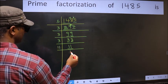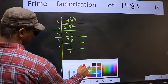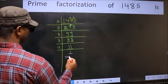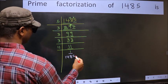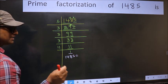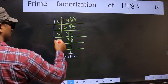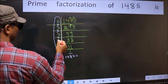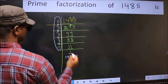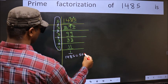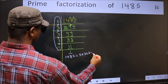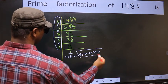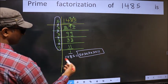11 is the prime number, so 11 once is 11. So we got 1 here. The prime factorization of 1485 is the product of these numbers, that is 5 into 3 into 3 into 3 into 3 into 11. This is the prime factorization of 1485.